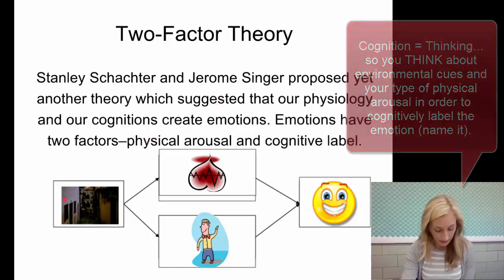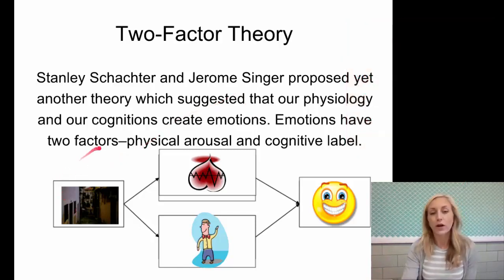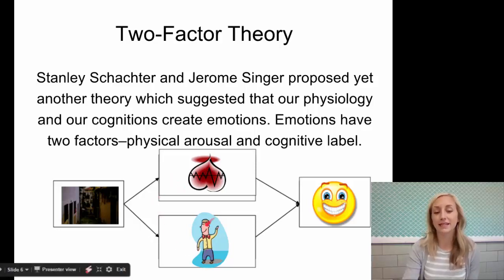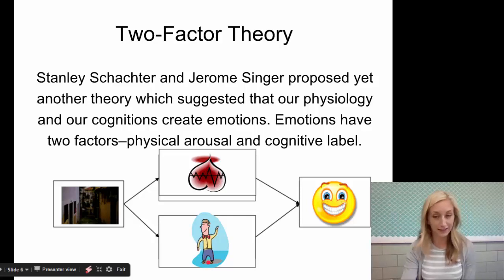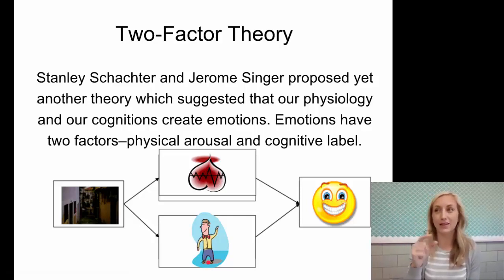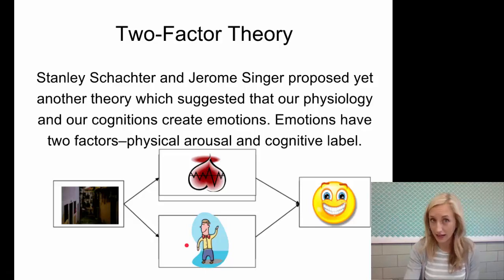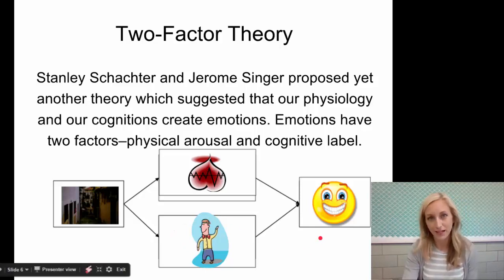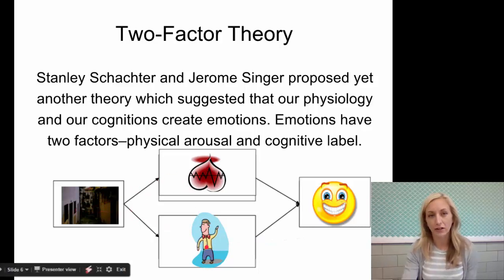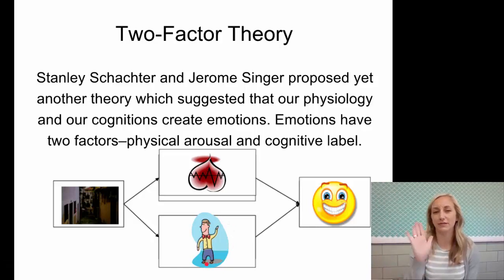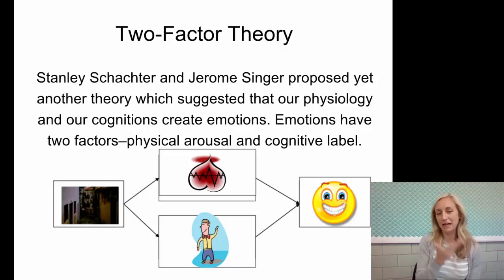Let's say you see a man in a dark alley at night. Your heart starts beating quickly and your breathing rate increases. But then the man waves at you and smiles, so you label it as: this isn't a dangerous situation. The cognitive label is 'this is not dangerous — I am not scared, I am happy.' Without the cognitive label you'd remain scared, but because you can say 'this is safe, he's a nice man,' you can cognitively label it and feel happy.